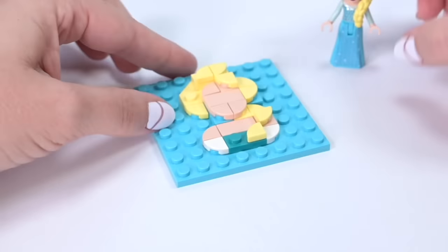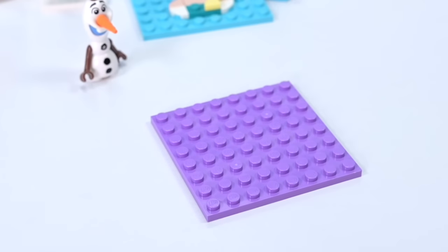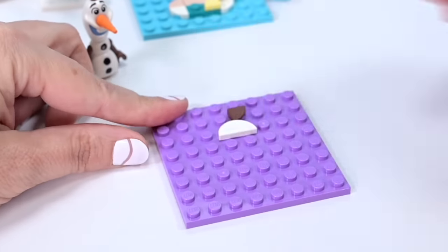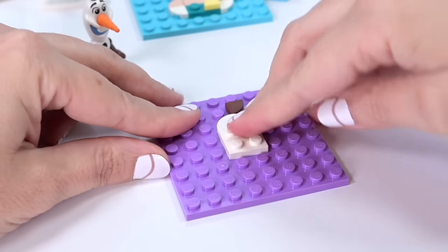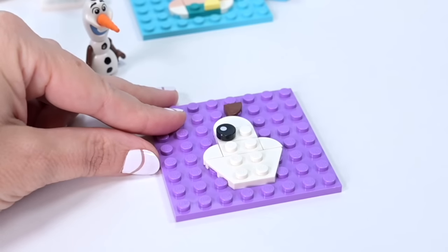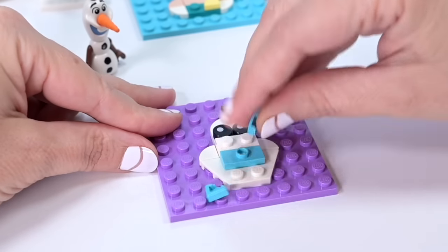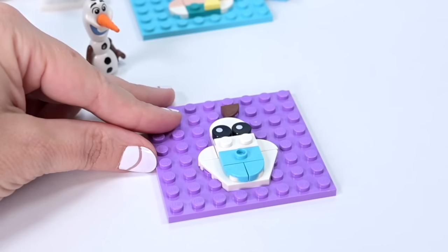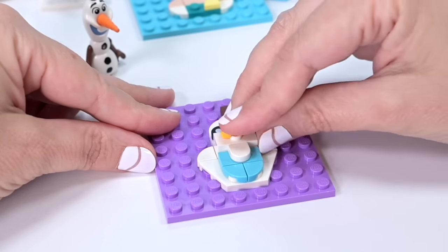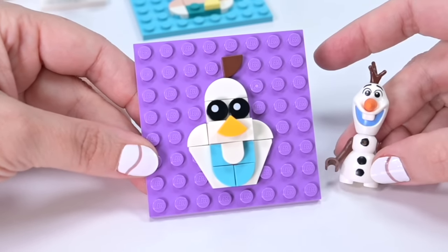Next we've got Olaf. He's going on the purple plate. Got a little brown bit at the top for his stick, then his white head and body. Printed eyeball pieces - very cute, I love how they're looking up to the side. Building up the next layer, blue for his mouth, then the carrot triangle for his nose. You know exactly who it is.